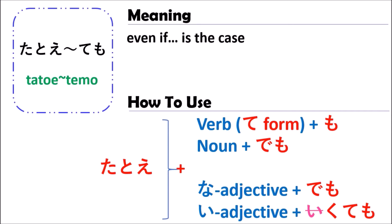So this explains how to use the grammar of たとい何々でも. It has the same meaning — 'even if something is the case' — but the form depends on whether you use a verb, noun, or adjective. Let's look at some examples together.